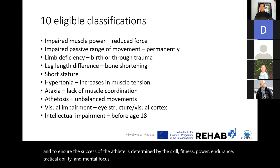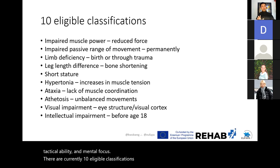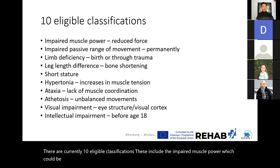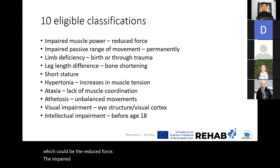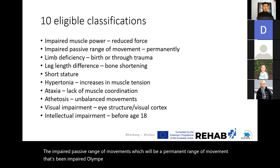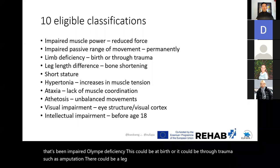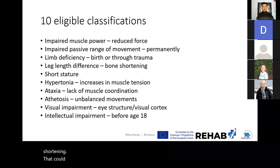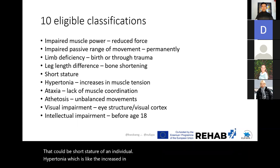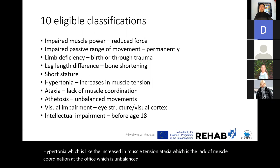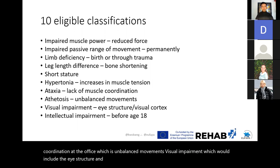There are currently ten eligible classification conditions: impaired muscle power (reduced force), impaired passive range of movement (permanent), limb deficiency (at birth or through trauma such as amputation), leg length difference (bone shortening), short stature, hypertonia (increased muscle tension), ataxia (lack of muscle coordination), athetosis (unbalanced movements), visual impairment (including eye structure and visual cortex), and intellectual impairment classified before the age of 18.